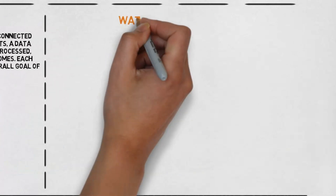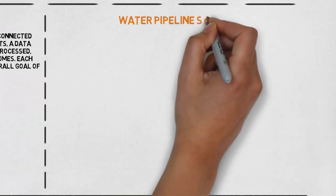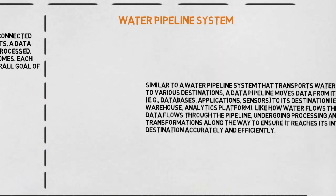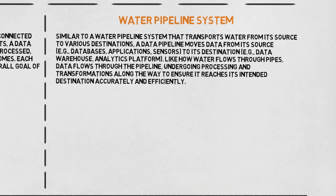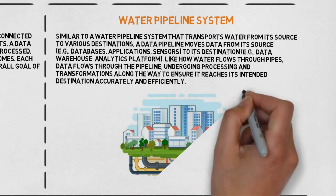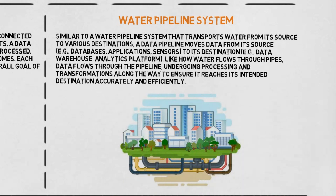Water pipeline system: similar to a water pipeline system that transports water from its source to various destinations, a data pipeline moves data from its source — for example, databases, applications, sensors — to its destination — for example, a data warehouse or analytics platform. Like how water flows through pipes, data flows through the pipeline, undergoing processing and transformations along the way to ensure it reaches its intended destination accurately and efficiently.